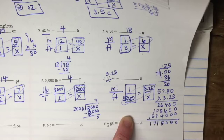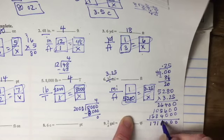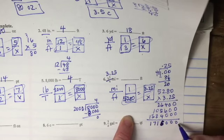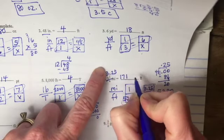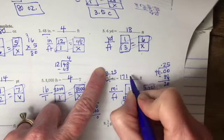And then on this one, don't forget about where your, oops, sorry. This is a six. Where your decimal goes. So I have one, two decimal places here, so I need to move my decimal over two places here. So this ends up being 17,160 feet.